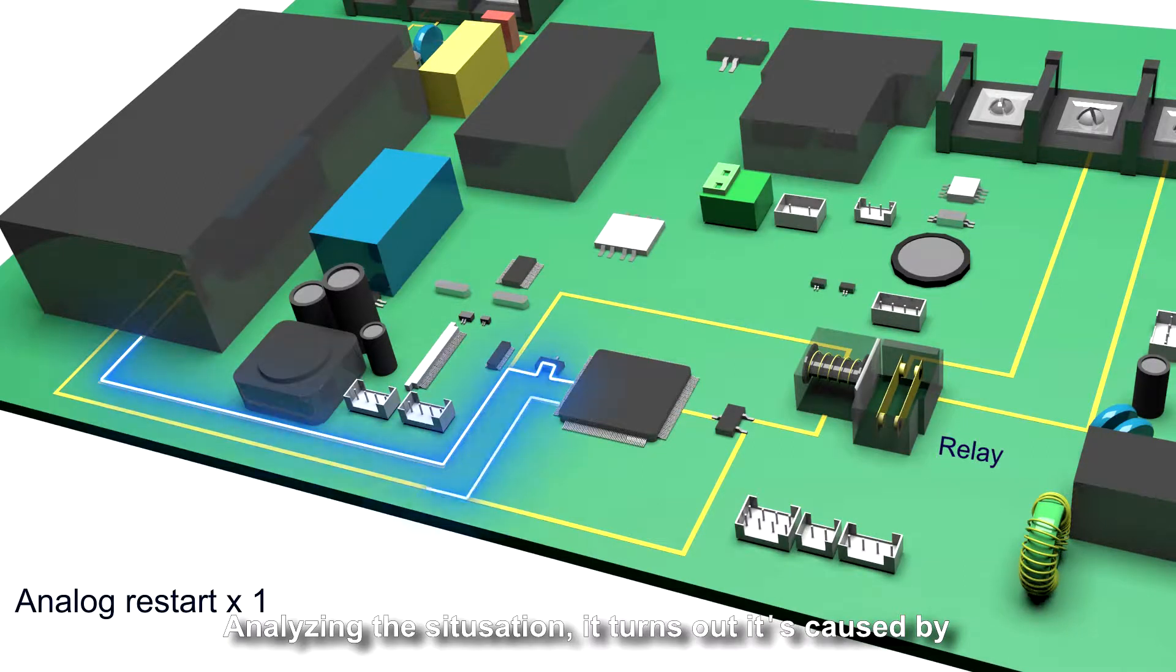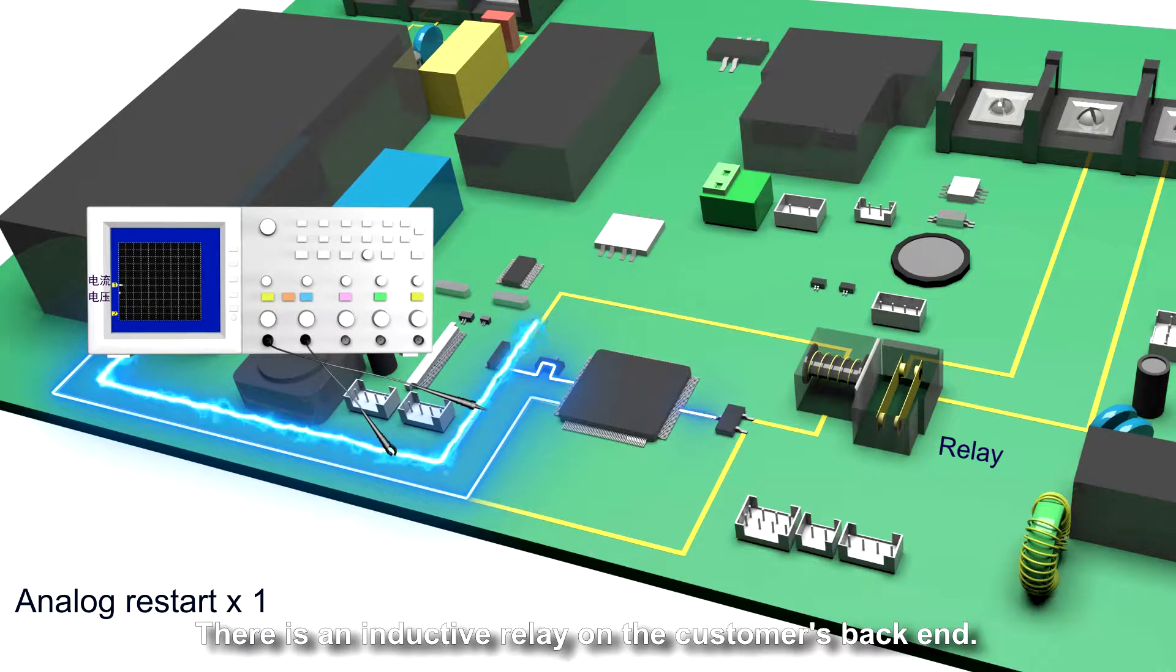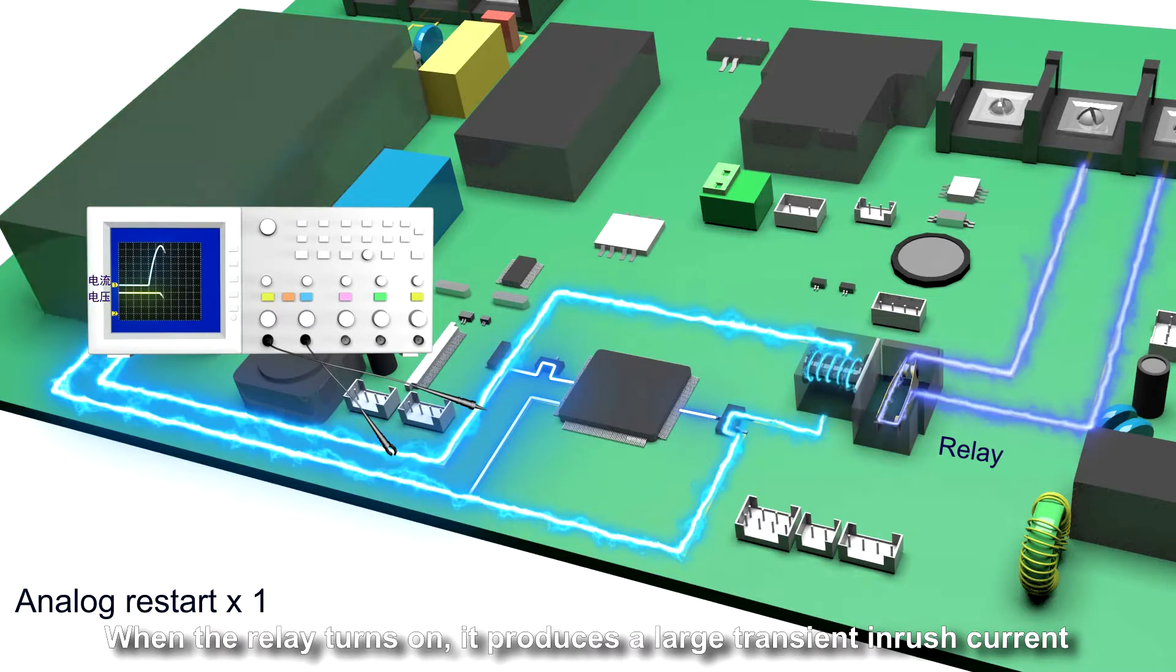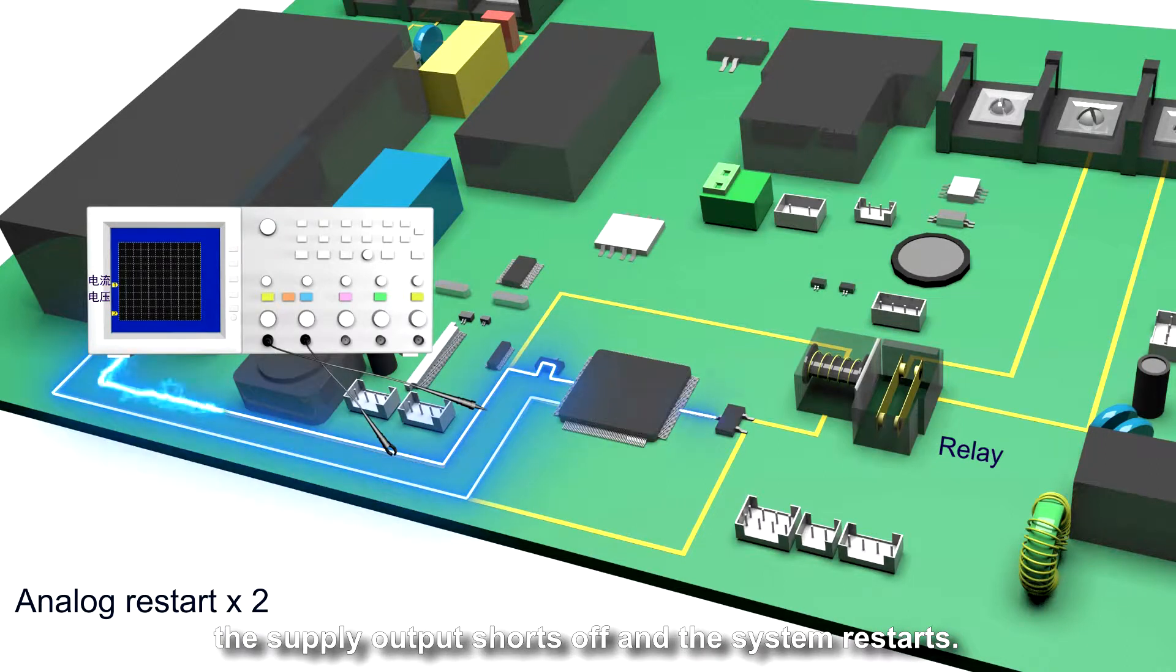Analyzing the situation, it turns out it is caused by a large transient current at the output terminals. There is an inductive relay on the customer's back end. When the relay turns on, it produces a large transient inrush current and triggers overcurrent protection in the upgraded product. The supply to output shuts off and the system restarts.